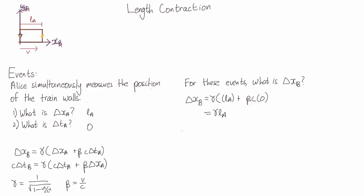So in Bob's reference frame, what we'll have is first the front measurement will occur, the train will move, and then the second measurement will occur.